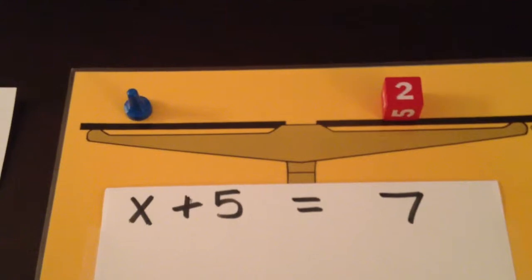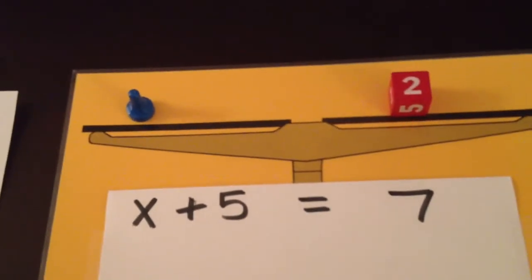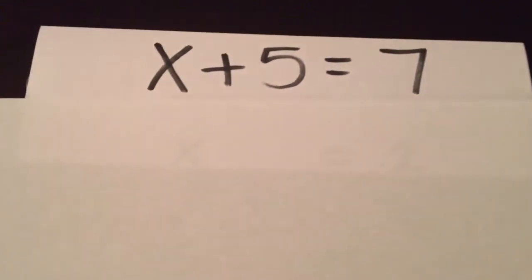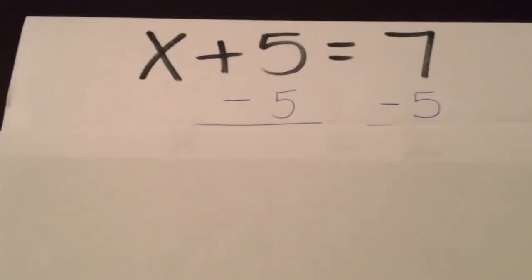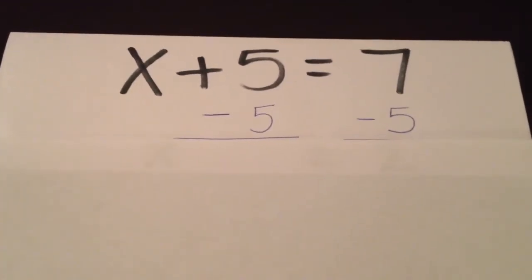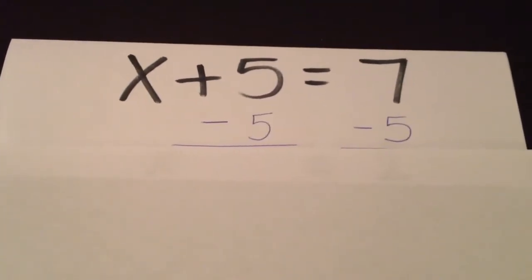If we do exactly the same thing on paper, what we would do is go back to this equation just written out algebraically. We're going to subtract 5 from both sides, which is the same thing as taking away the 5 number cube.